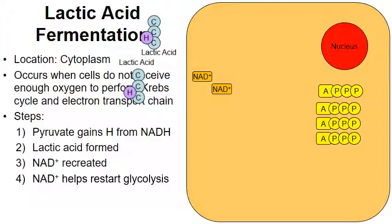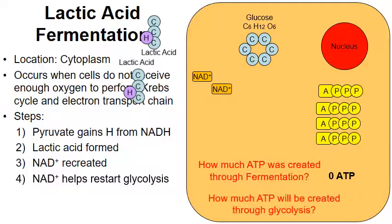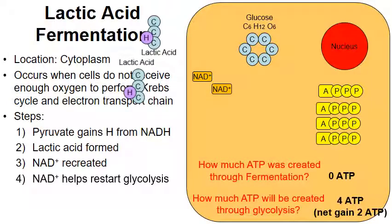Why is the NAD so important? It helps to restart glycolysis. Here's a new molecule of glucose, and glucose can be broken down with the help of ATP, enzymes, and NAD, creating more molecules of ATP. If I were to ask you how much ATP is created through fermentation, the answer is zero — fermentation does not make any ATP. It makes lactic acid waste, but more importantly it regenerates NAD, which is used to help the next round of glycolysis, which produces a net gain of two ATP.